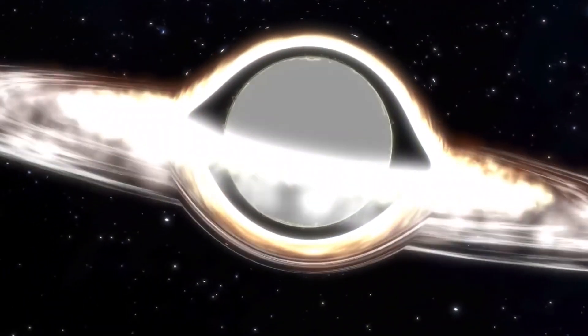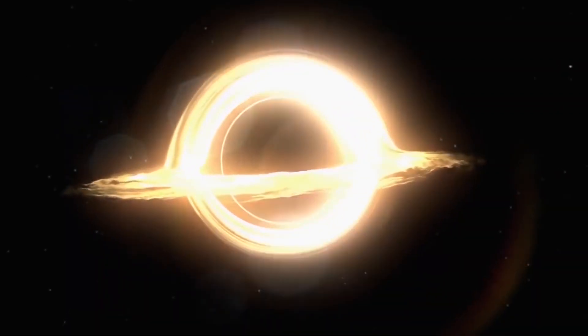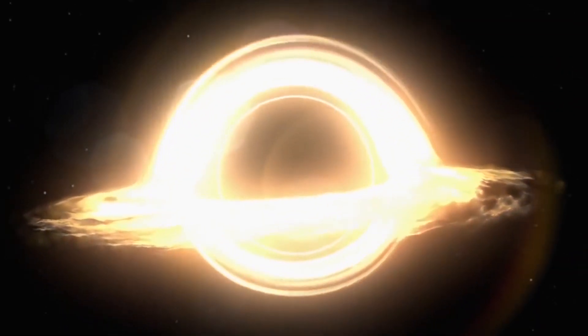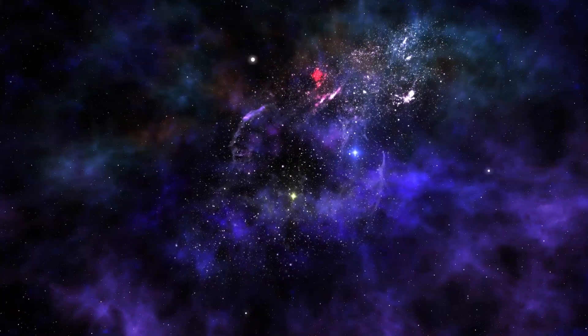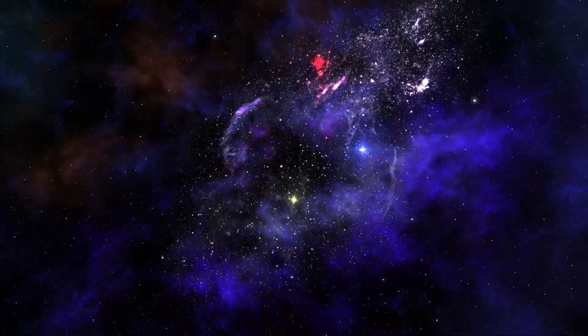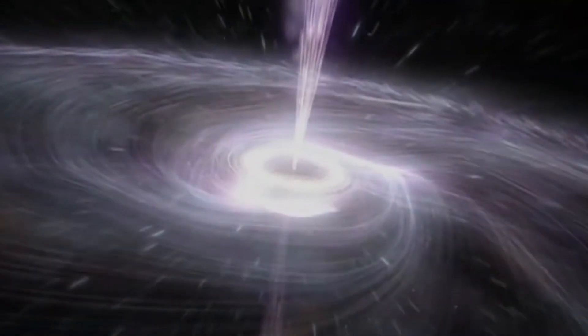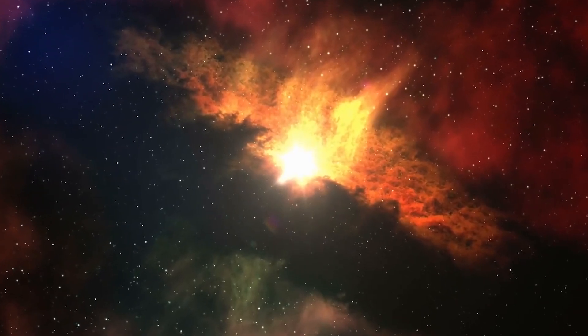However, the process of a black hole turning into a white hole as suggested by Rovelli and his colleagues is not a fast one. Rovelli estimated that a black hole with a mass equal to that of the sun would take about a quadrillion times the current age of the universe to convert into a white hole. Besides, this theory means white holes cannot be created directly, unlike black holes that result from dying stars.